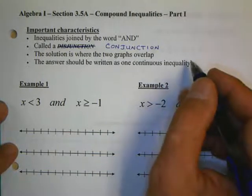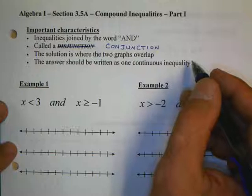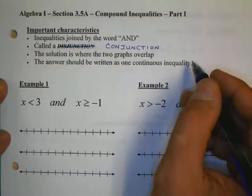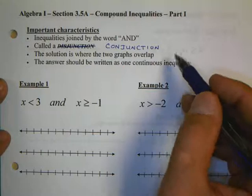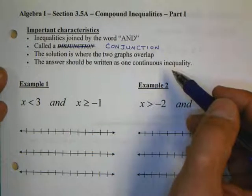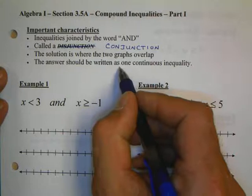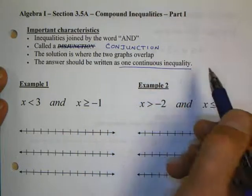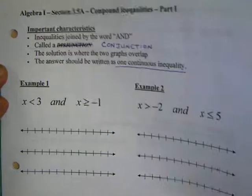Now, up until now, we've been doing inequalities that only have one inequality in a problem. Today we're going to look at where two inequalities overlap. Now, our result, or our answer for our inequalities, is going to be written as one continuous inequality, as it says right here in our overview.